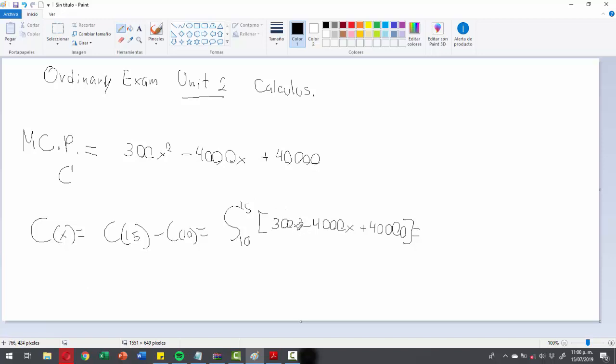So we got the integral of x squared is going to be x cubed over 3, minus 4000x squared over 2, plus 40,000x, from 10 to 15.